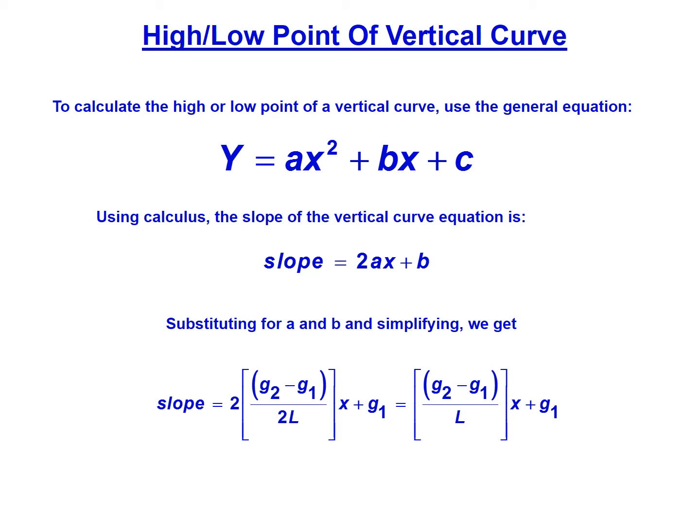We can simplify that by canceling out the 2s. So we have the slope equals g2 minus g1 divided by L multiplied by x plus g1.